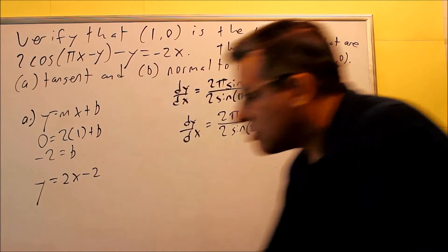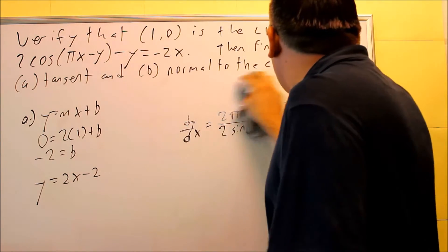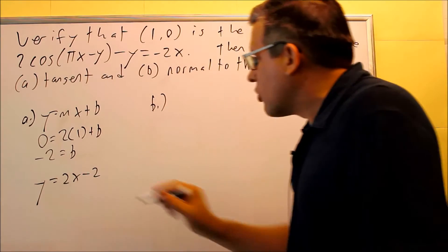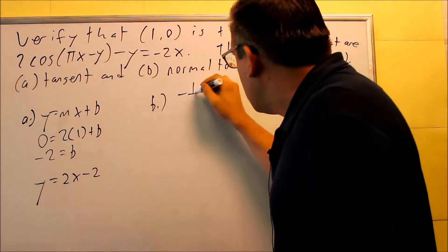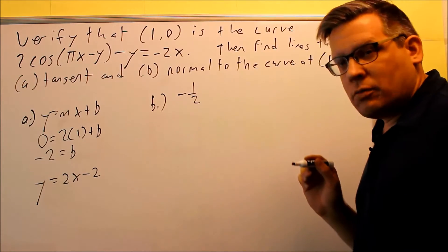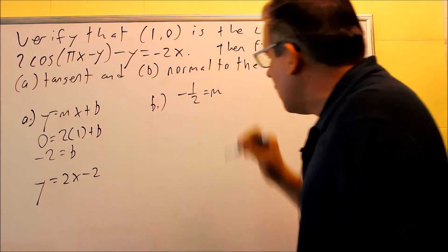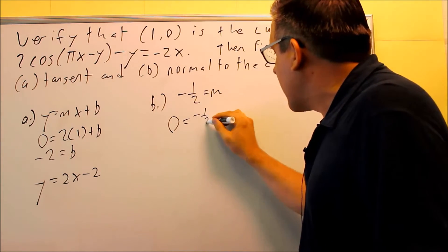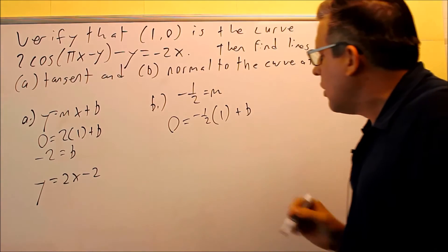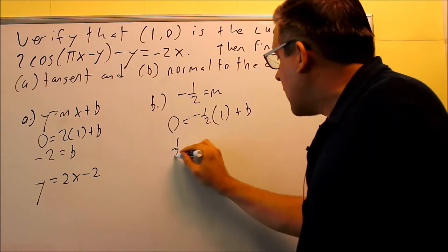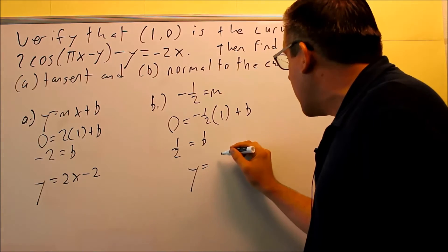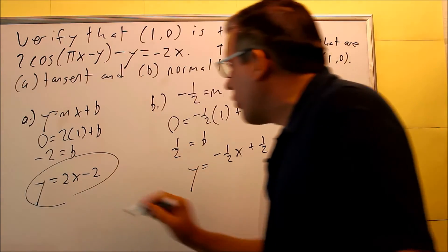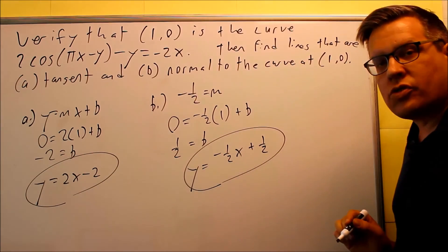Now for part b, we need to find the line that's normal to the curve. Normal means you want a line with the opposite reciprocal slope. We got slope 2 for the tangent, so the normal slope is negative 1/2. Using y = mx + b with x = 1, y = 0, and m = negative 1/2: 0 = negative 1/2 times 1 + b, giving b = positive 1/2. So the normal line equation is y = negative 1/2 x plus 1/2.